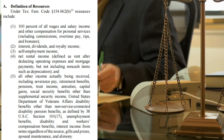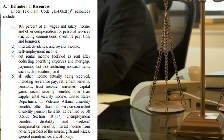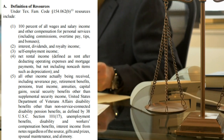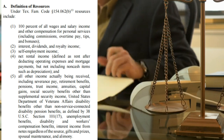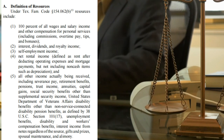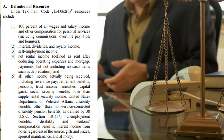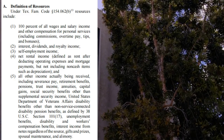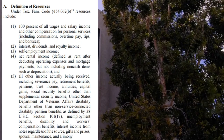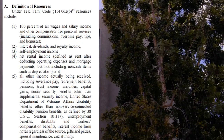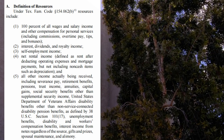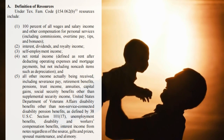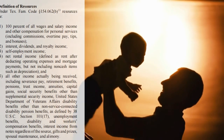Also included is all other income actually being received, including severance pay, retirement benefits, pensions, trust income, annuity, capital gains, social security benefits other than supplemental security income, United States Department of Veterans Affairs disability benefits other than non-service-connected disability pension benefits, unemployment benefits, disability and workers compensation benefits, interest income from notes regardless of the source, gifts and prizes, spousal maintenance, and alimony.